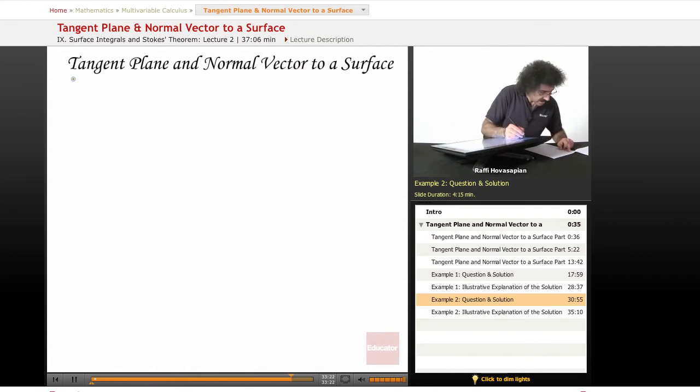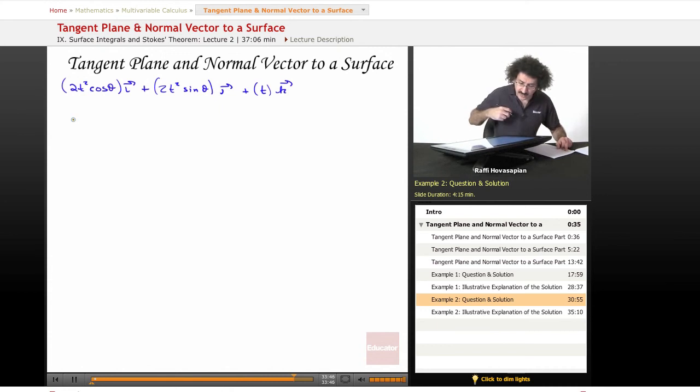I end up with the following: 2t² cosine theta, 2t² sine theta, and t. This is my n, that's my normal vector.